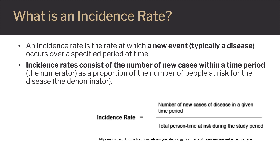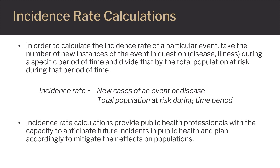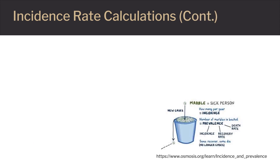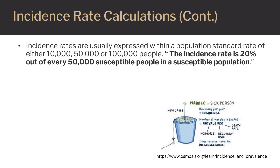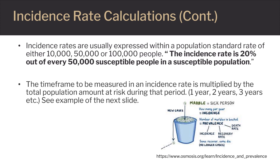See examples on slide 6. Incidence rate calculations provide clinical and public health professionals with the capacity to anticipate future disease incidents and plan health educational and/or health promotional programming for susceptible communities. Incidence rate calculations also include a chronological amount of time — 1, 2, 3 or more years — to be multiplied by the community size within the denominator of the problem.